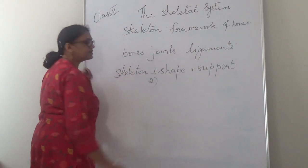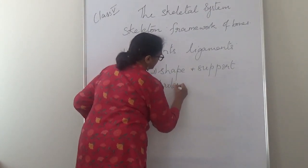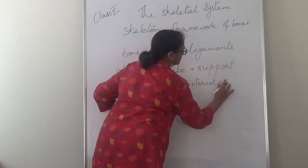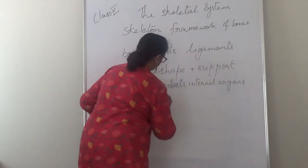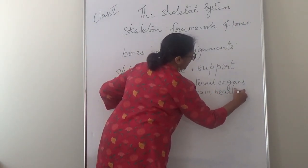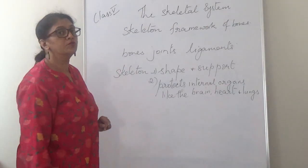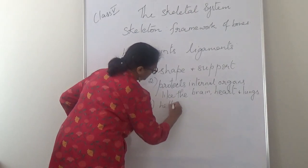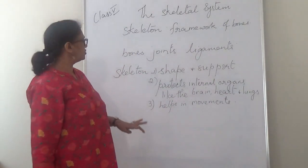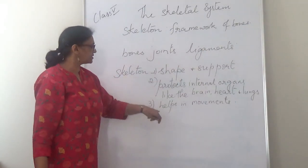Number two: the skeleton protects the internal organs of our body, like the brain, heart, and lungs. The skeleton also helps our body to move, with the help of our joints. So the three functions of the skeleton are: it gives shape and support to the body, protects internal organs like the brain, heart, and lungs, and helps in movement.